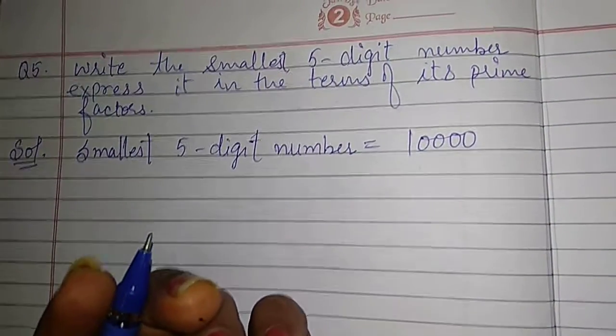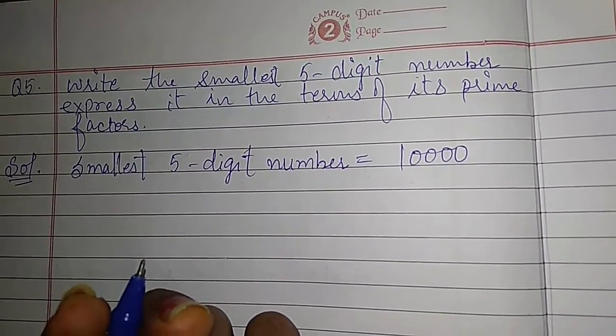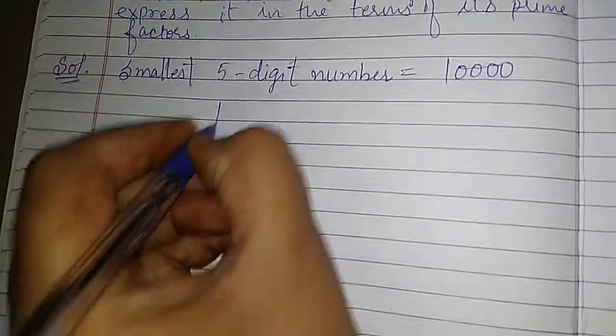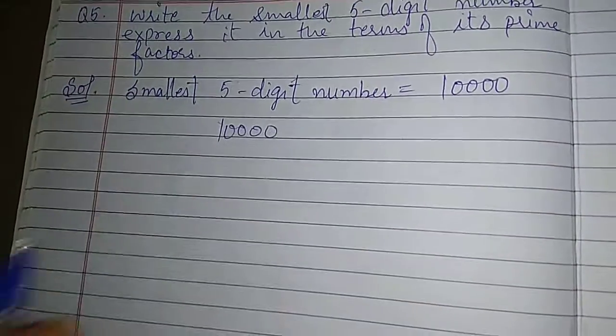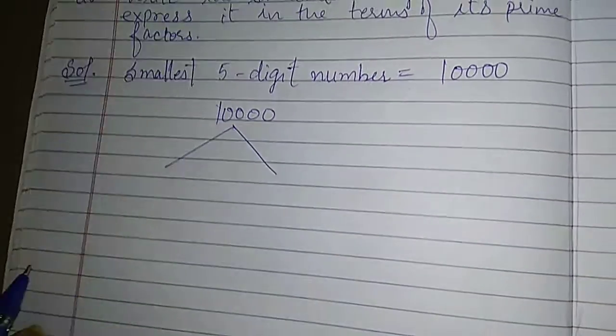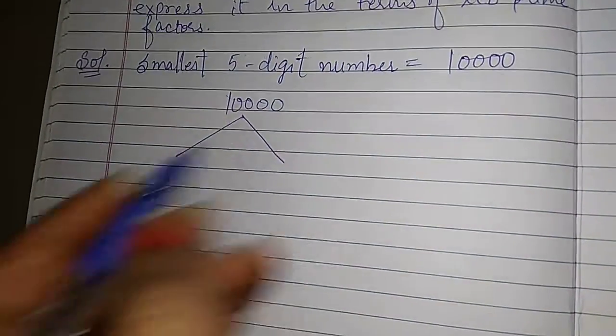After that we write it in the factor tree form. 10,000. Now we write in simply factors form.